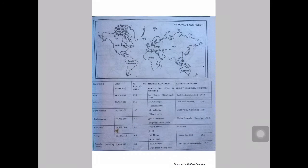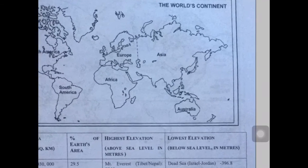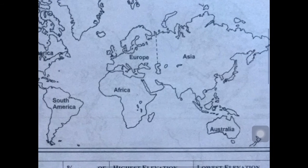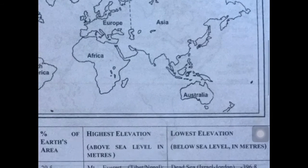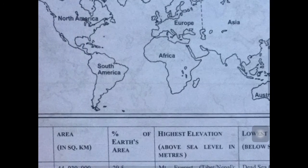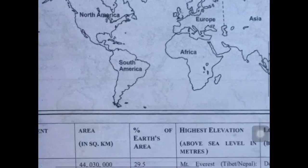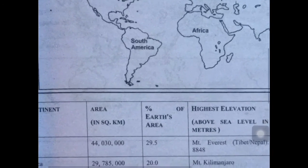Today we are going to discuss about the seven continents of the earth. The first one is Asia, Europe, Australia, Africa, South America, North America, and Antarctica.